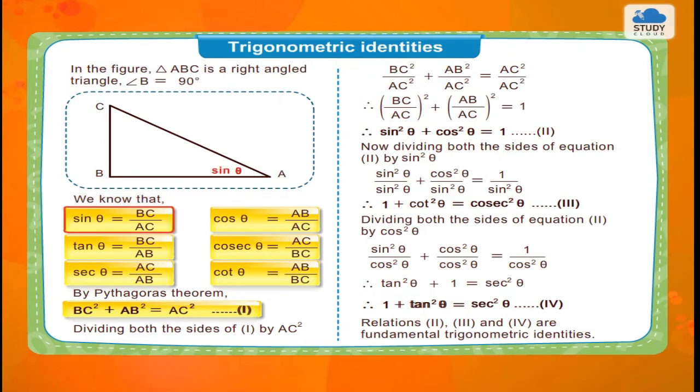We know that sin θ is equal to BC upon AC, cos θ is equal to AB upon AC, tan θ is equal to BC upon AB, cosec θ is equal to AC upon BC, sec θ is equal to AC upon AB, cot θ is equal to AB upon BC.